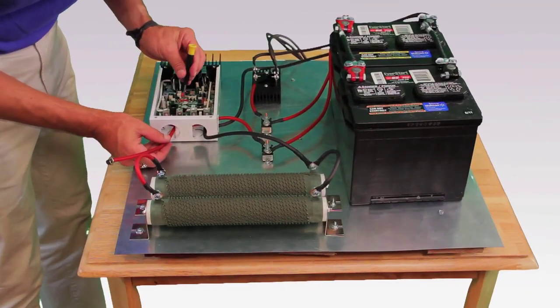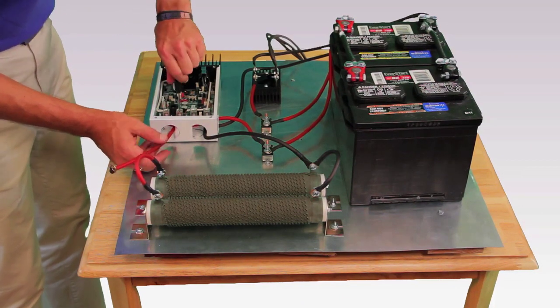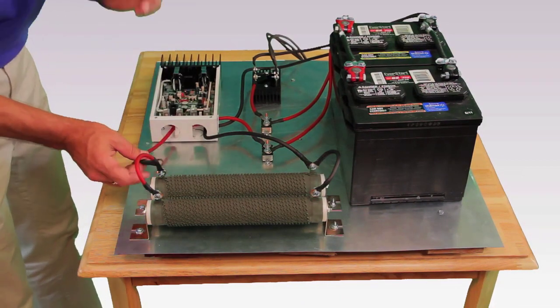The final terminal in your DC controller is labeled PV positive slash load positive. Take a red wire from that terminal and connect it to the positive terminal on the dump load.